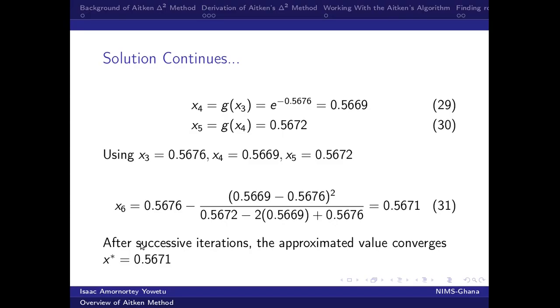Which in the previous slide there, it shows that our fixed point iteration is really slow in arriving at the convergence or the approximate value. So this has obtained our approximate value within these few steps. These few steps show that involving an Aitken's method in an algorithm which converges, an iterative method which converges linearly, really helps to arrive faster.